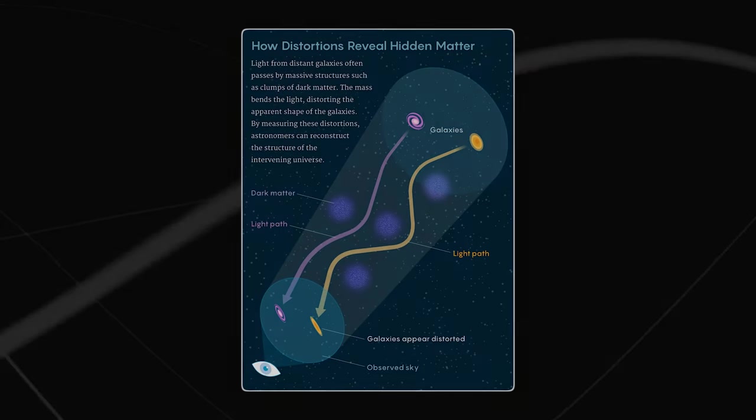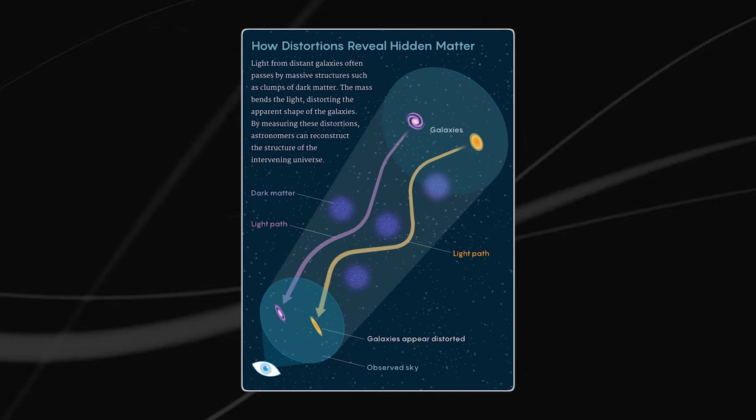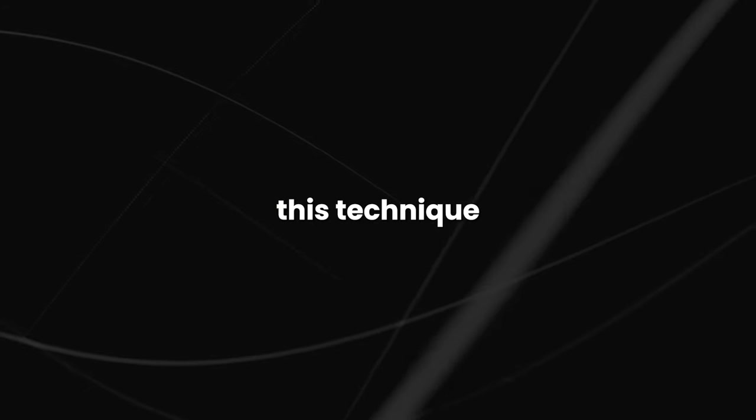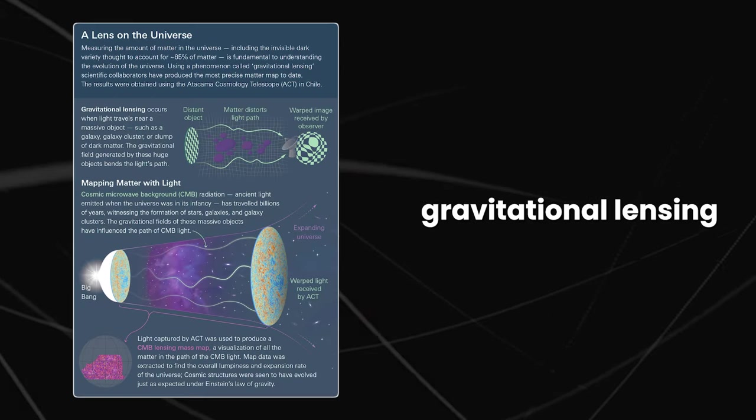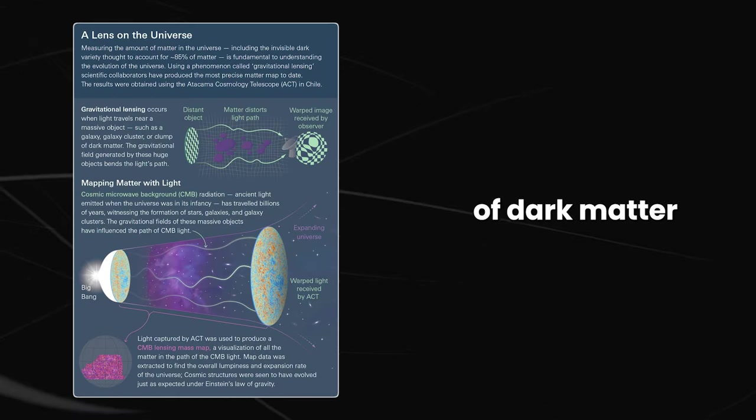So scientists have had to get creative to study them. One technique involves looking at the light from distant galaxies and observing how it is distorted by the gravitational pull of dark matter along the way. This technique, called gravitational lensing, has allowed scientists to map out the distribution of dark matter in the universe.